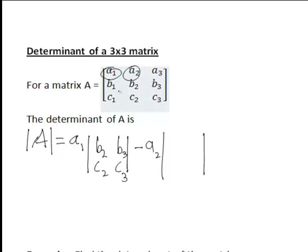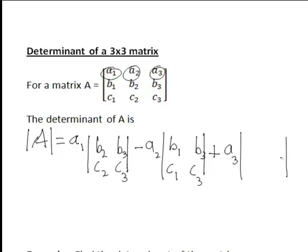So minus A2 times the determinant of B1, C1, B3, C3. And finally, it is then plus the element in the first row and the third column, which is A3, times the determinant obtained when we cover up the first row and the third column, giving the determinant of B1, B2, C1, C2.